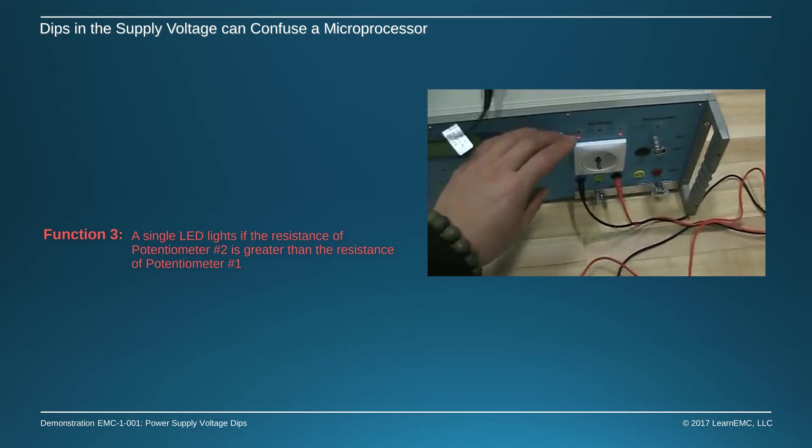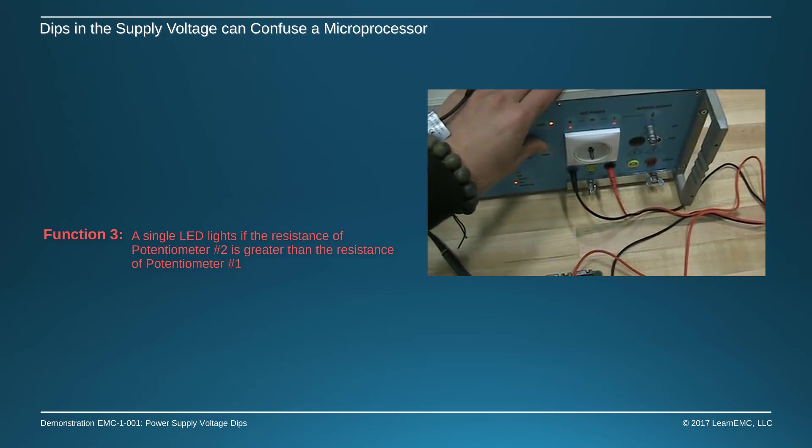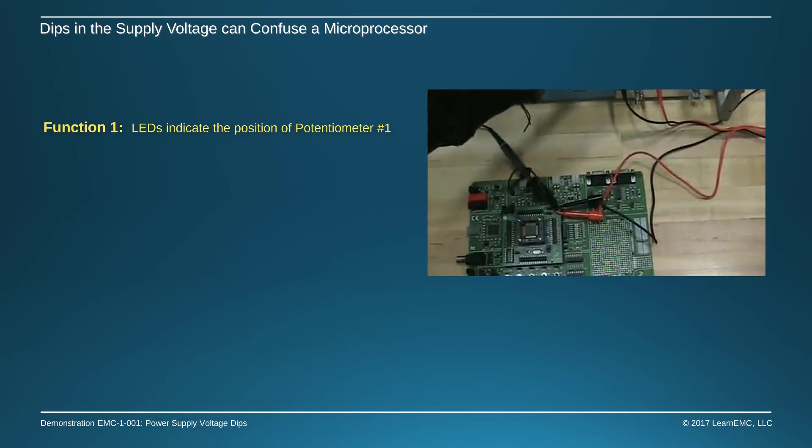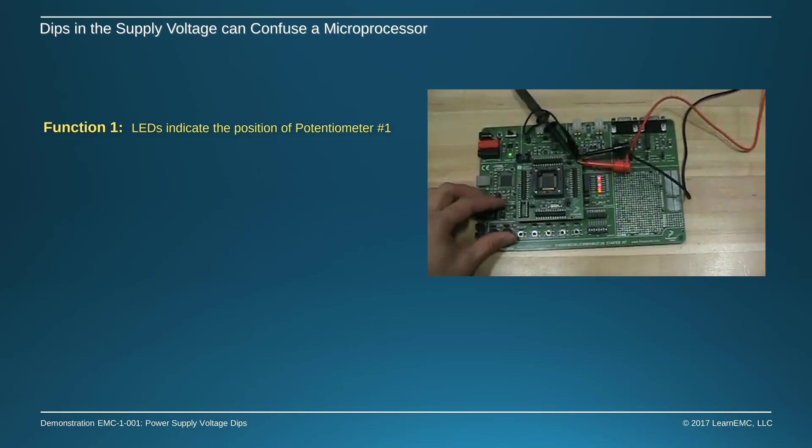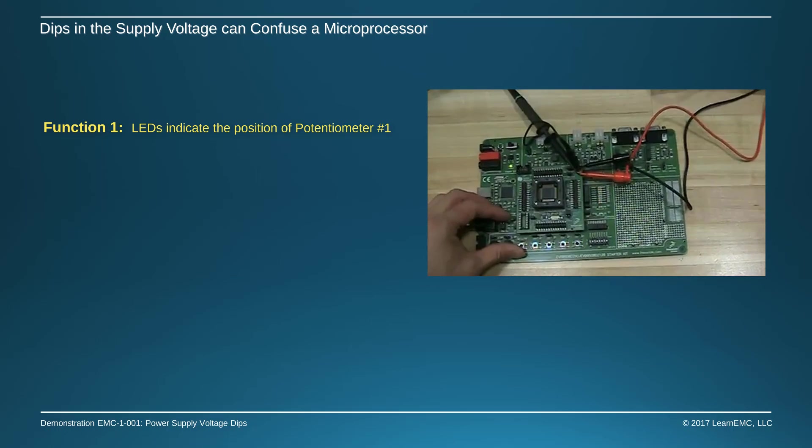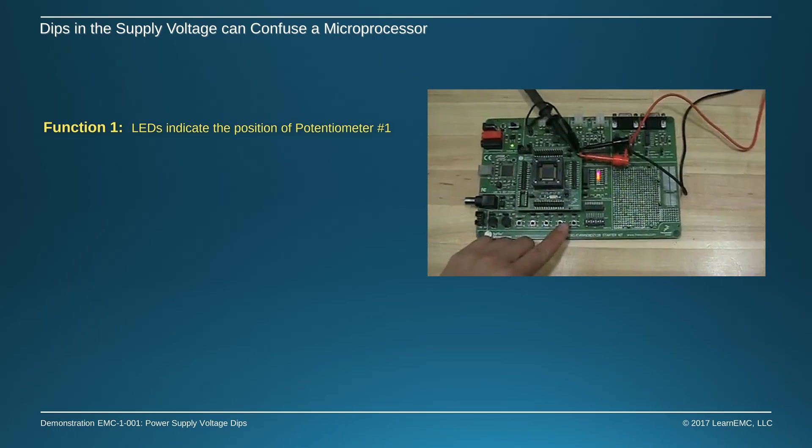Now let's drop the supply voltage briefly by manually shorting out the source. All the LEDs light up and we can see that they are indicating the position of the potentiometer on the right. This is function 1.